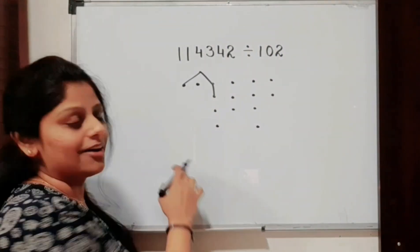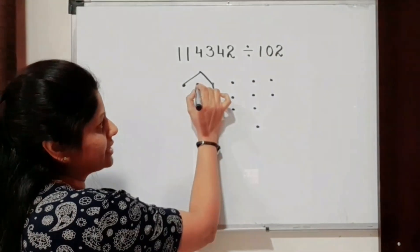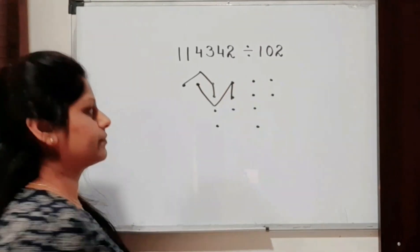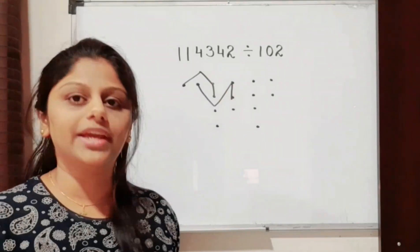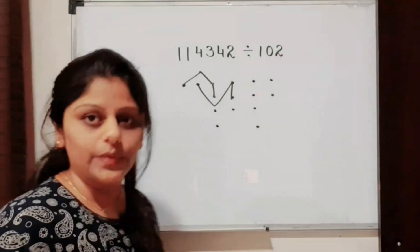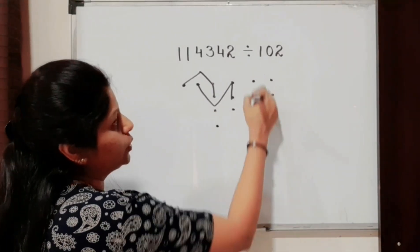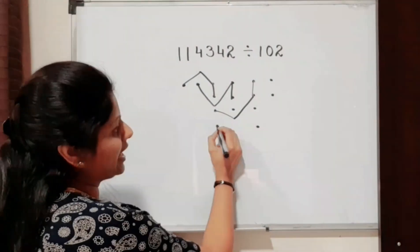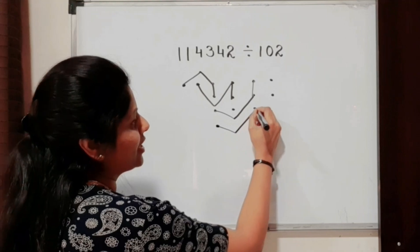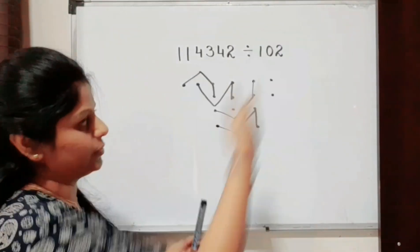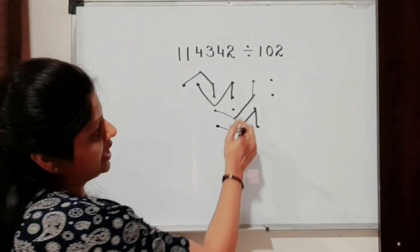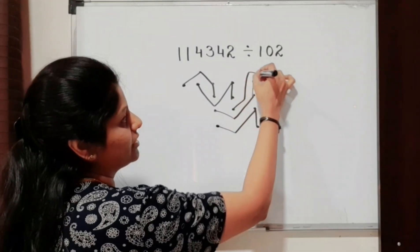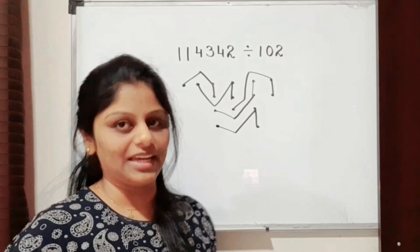We continue the pattern: one dot, skip zero, two dots. Again in the next column we start with one dot, leave the next column (zero), and take two dots in the third column and connect them. We repeat this process for all remaining dots — one dot, skip zero column, two dots — connecting each set until all dots are used.